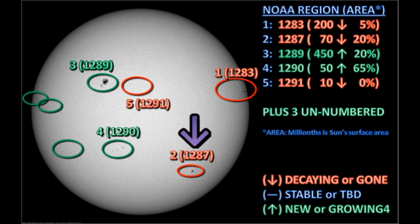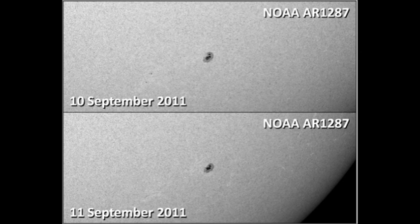Next let's take a look at region 1287 in the southwest. According to NOAA's numbers, it's lost about 20% of its area in the last 24 hours. You can see some evidence of that in the fact that the trailing spots have disappeared entirely.